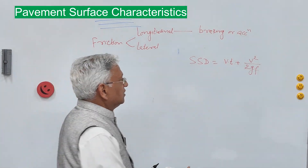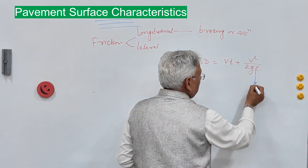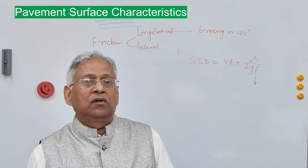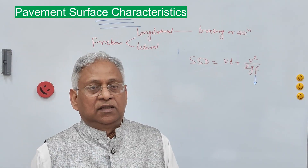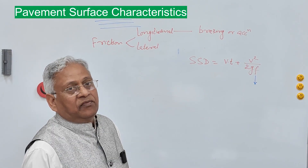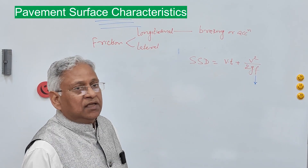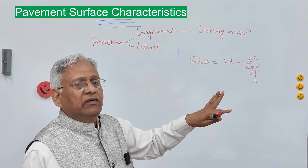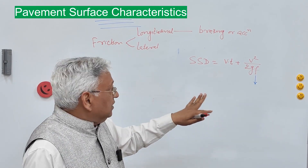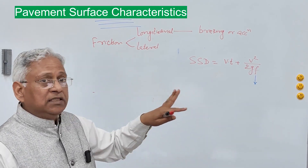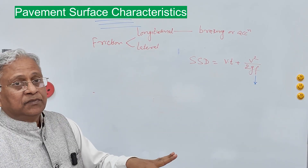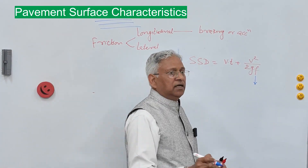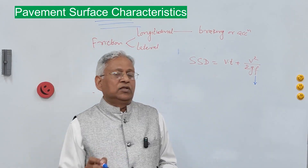In this equation, f is the longitudinal coefficient of friction between the tire and the pavement surface. This depends upon several factors, including speed of movement — it is low at high speed and high at low speed.